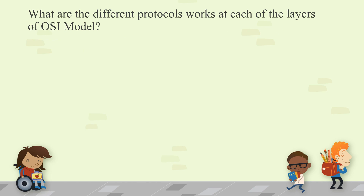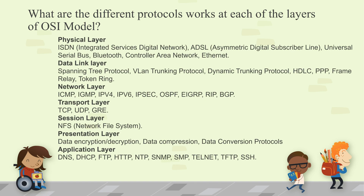What are the different protocols at each layer of the OSI model? At the Physical layer: USB, Bluetooth, LAN adapter wires, ISDN, and ADSL technologies. At the Data Link layer: Spanning Tree Protocol, VLAN protocol, DTP (Dynamic Trunking Protocol), HDLC, PPP, and Frame Relay all come under the Data Link layer.